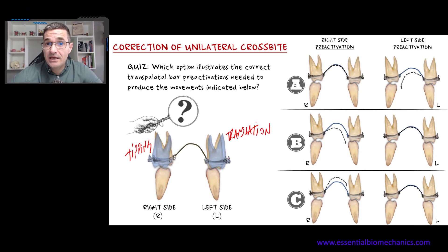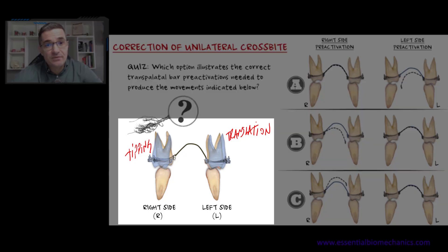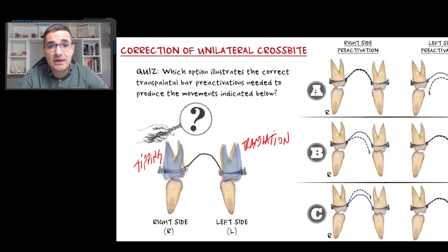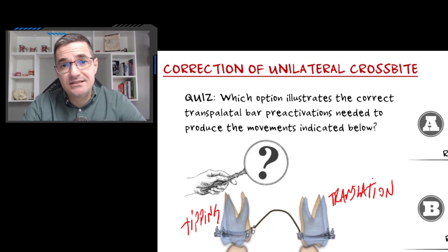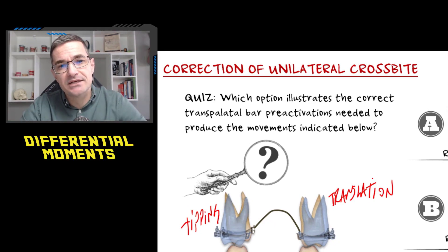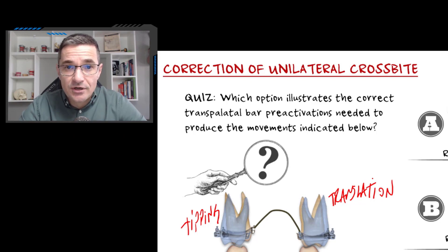If I am able to stimulate these different types of movements, I will potentialize the movement in the crossbite side and minimize the movement in the contralateral side, because the tipping movement is much faster than the translation. The biomechanical reasoning for producing these different movements is by the application of differential moments — applying a specific moment-to-force ratio in these two units.